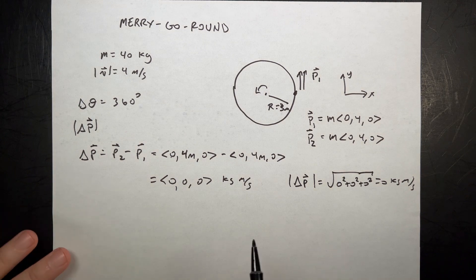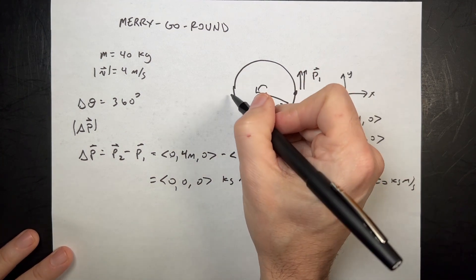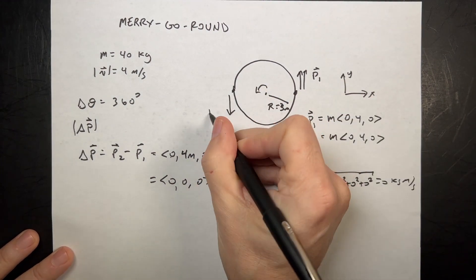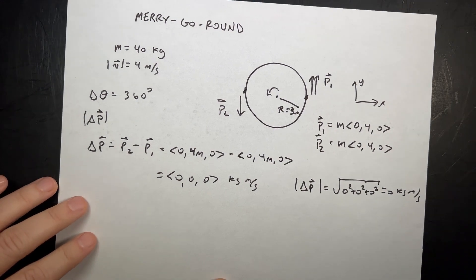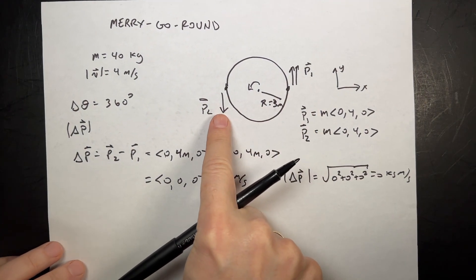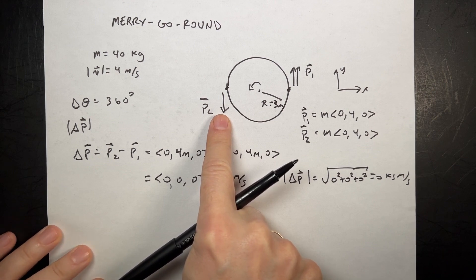What if the child goes halfway around? So that would be over here. That's P2. So now we just need to change our value for P2. Remember the magnitude of P1 and the magnitude of P2 are the same because the speed is the same and the mass is the same. But the change in momentum is not 0.